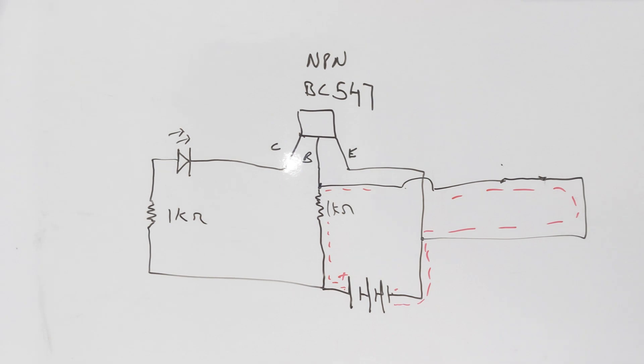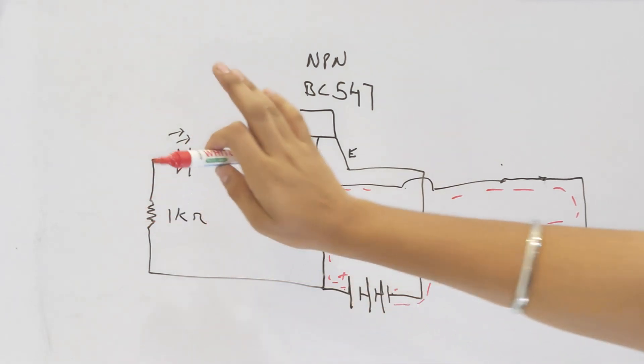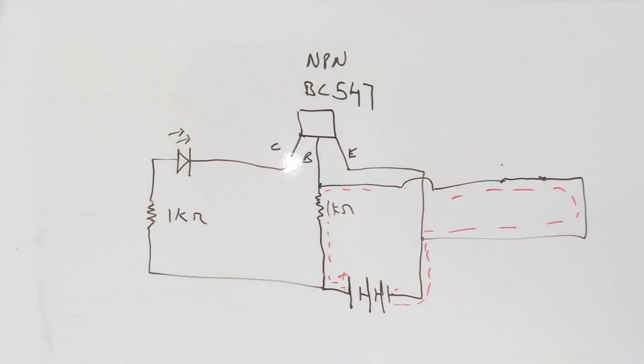Because current always follows the low resistance path, and transistor resistance is high compared to 1 kilohm, current will go through the wire and go to the ground. This way the LED will turn off. Now I open the switch as the wire breaks.